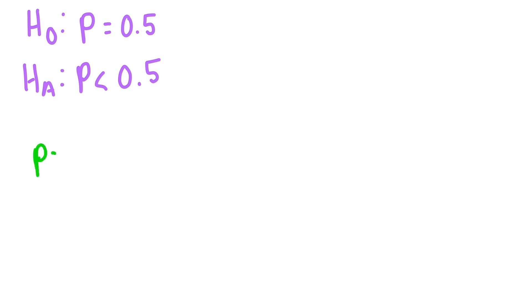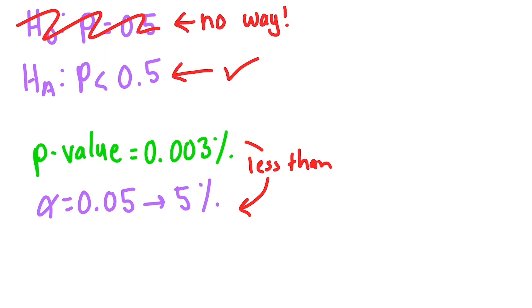Since this is much lower than our established 5% significance level, we can reject the null hypothesis, meaning that there are probably less than 50% chocolate chip cookies in the bag.